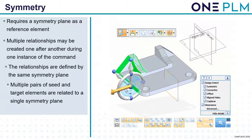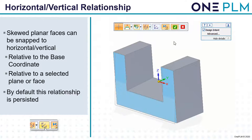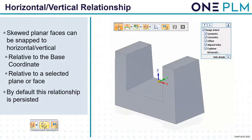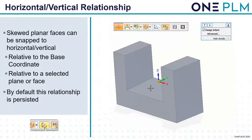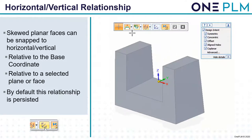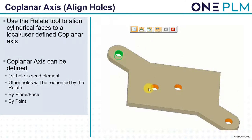Horizontal and vertical relationships work similarly to how they work in 2D — making a line horizontal or vertical. This is also available for 3D faces. We can click these in relation to the base coordinate system or a secondary coordinate system — for example, if we want to make a load of faces at 45 degrees we could create another coordinate system. By default this is a persisted relationship, so it will appear in the design intent box.